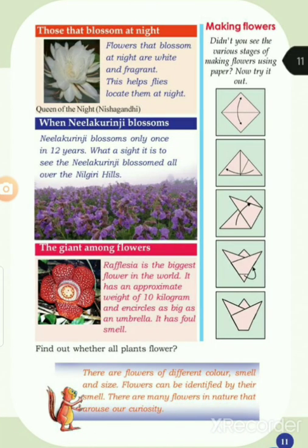Here is a picture of cune of the night — nishagandhi. Does it blossom at night? Flowers that blossom at night are white and fragrant. Flies locate them at night. Then, nilakuranyi — this flower is seen in the hills. Nilakuranyi blossoms only once in twelve years. What a sight it is to see the nilakuranyi blossom all over the Nilgiri hills!